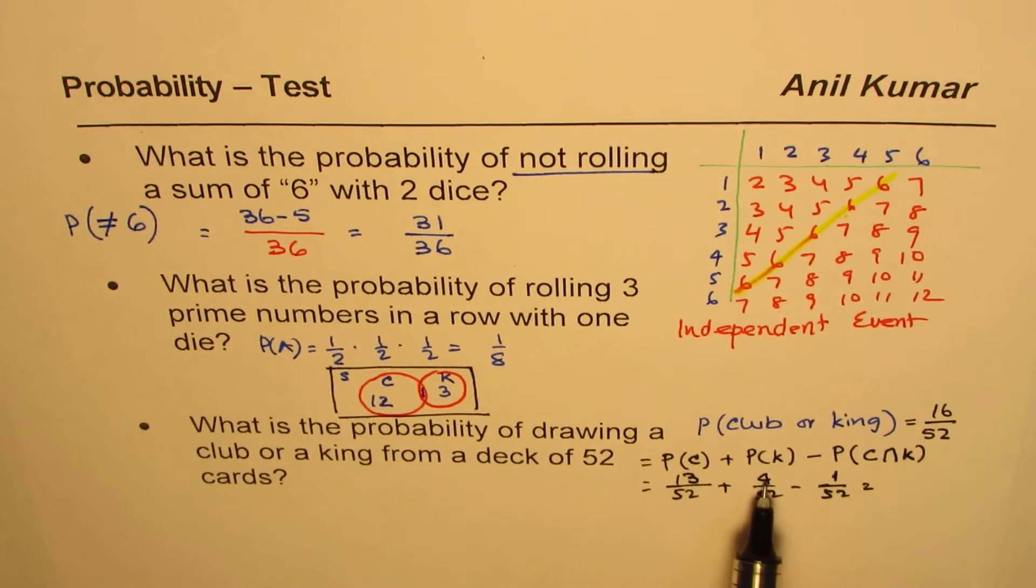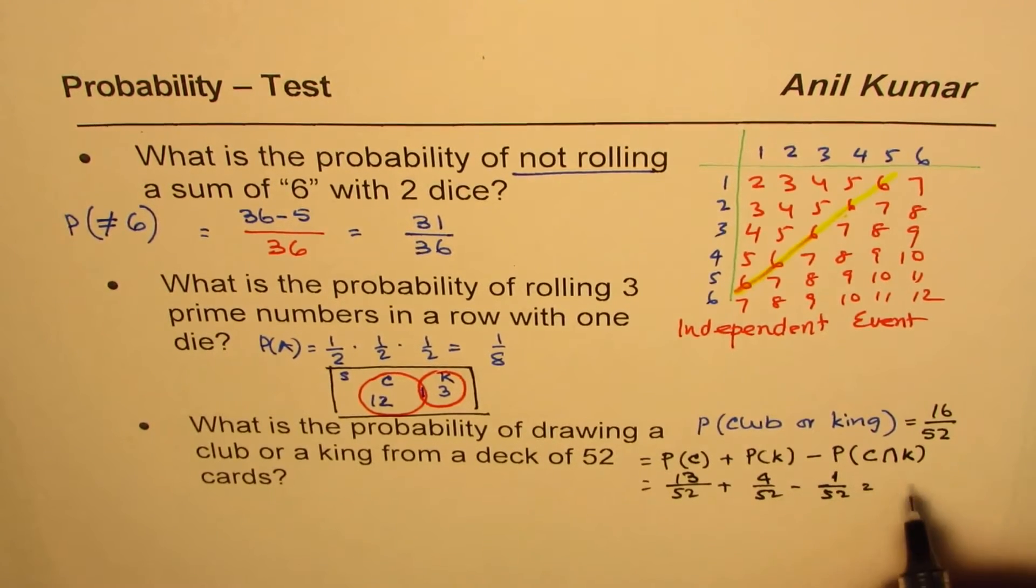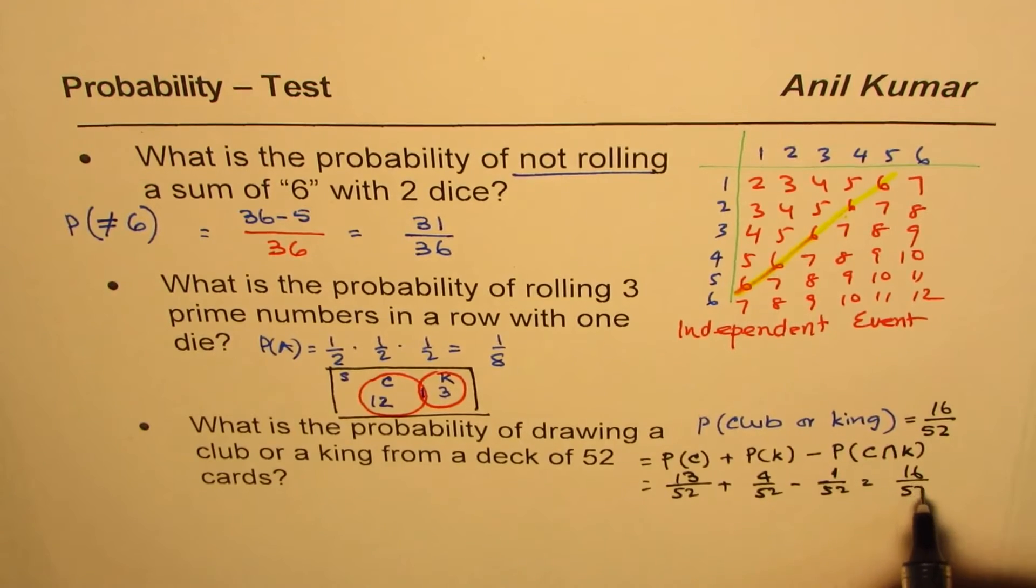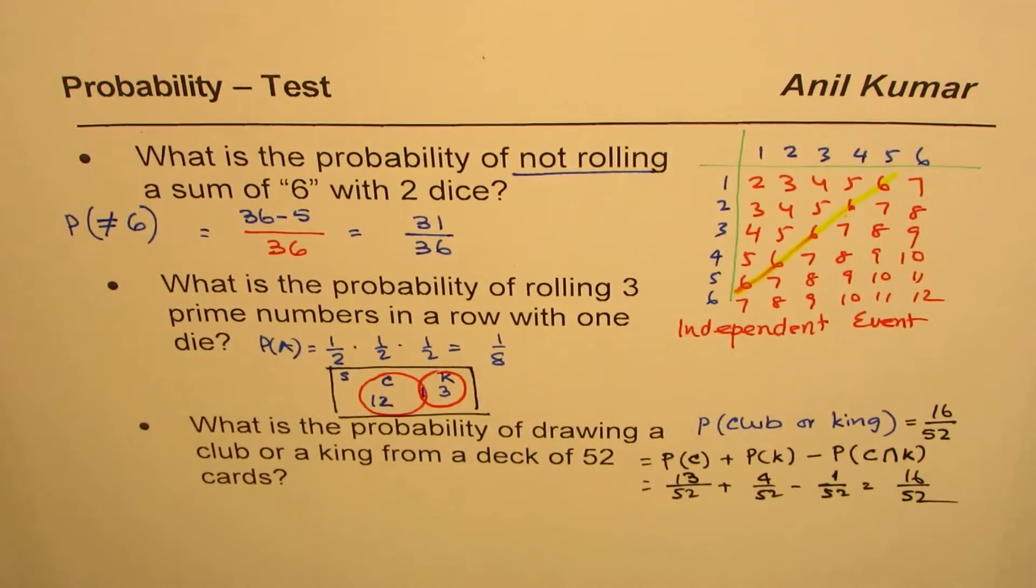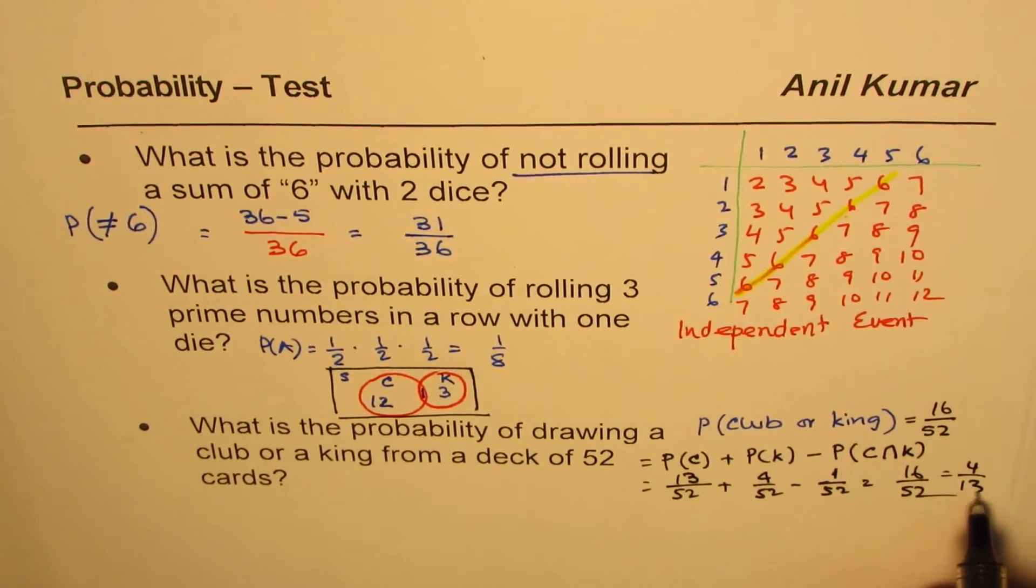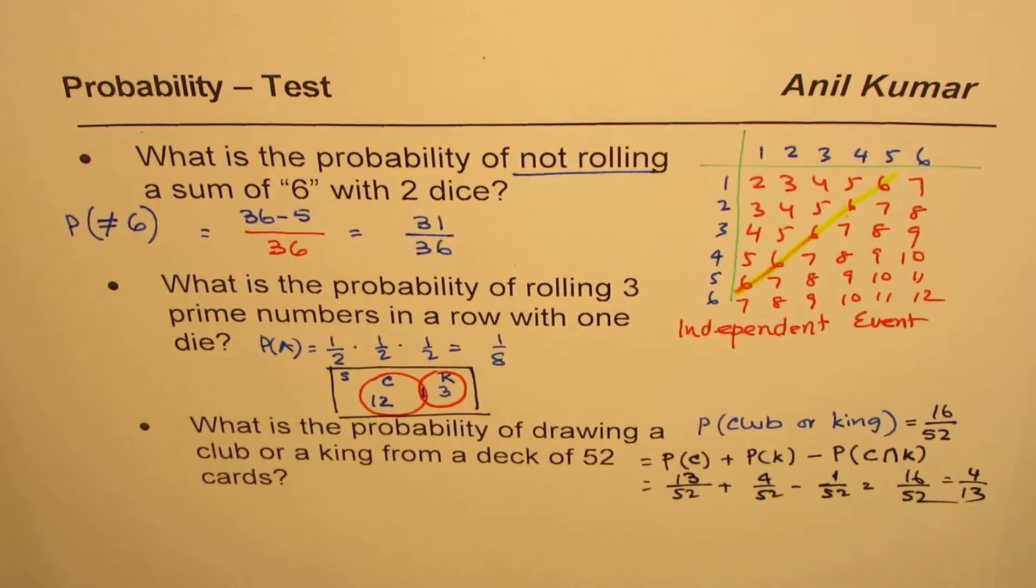And that gives us the same answer: 13 plus 4, 17 minus 1, 16 over 52. You could always simplify this, you know 4 times 13, so you could write this as 4 over 13. Is that okay? So that is how you should answer these questions.